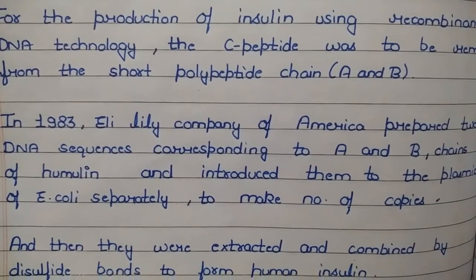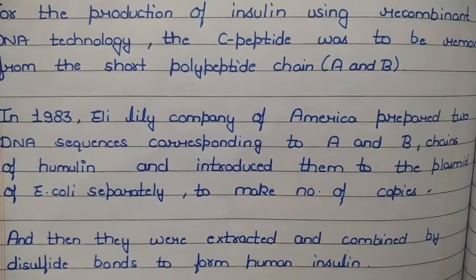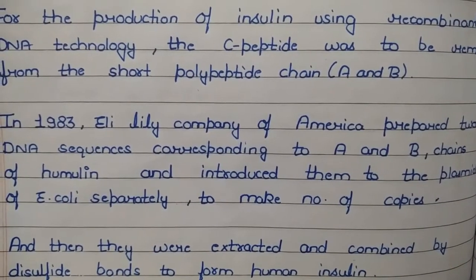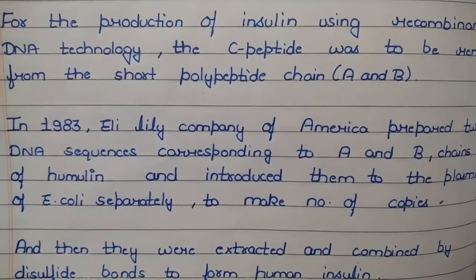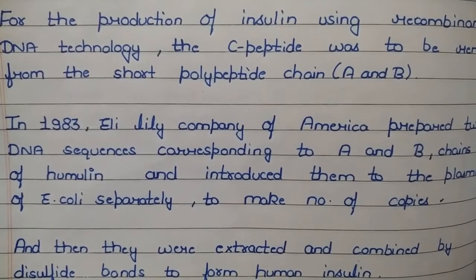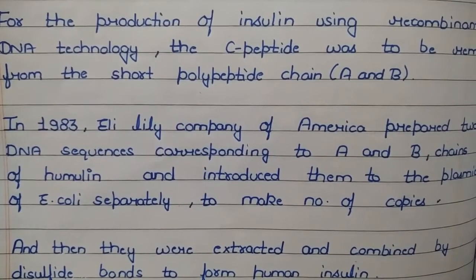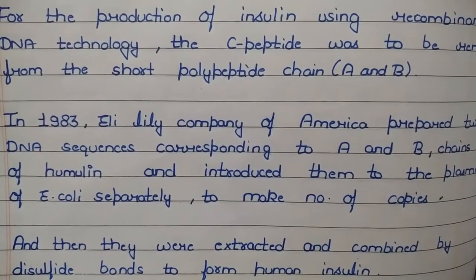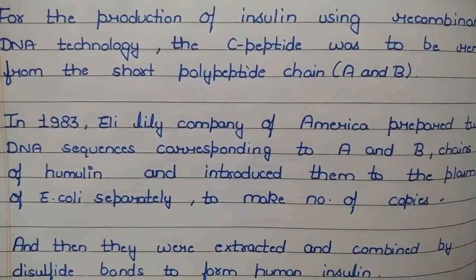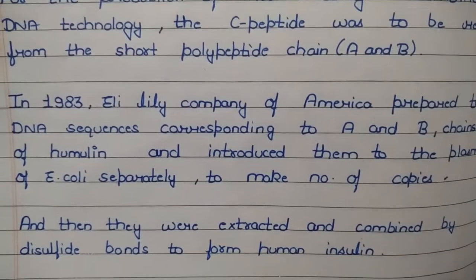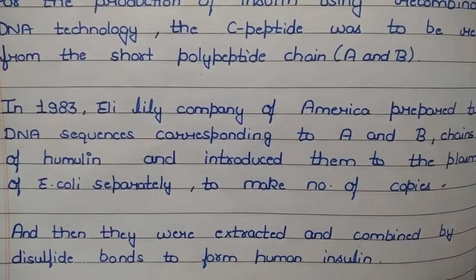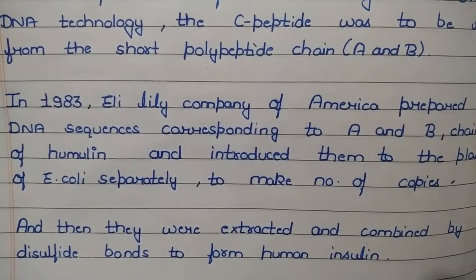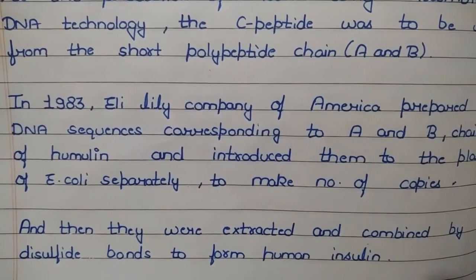The DNA sequences for the A and B chains were taken from human insulin — not extracted from slaughtered cattle or pigs, which had caused side effects in patients. These sequences were introduced separately into E. coli bacteria to produce multiple copies. Once the copies were made, they were extracted and combined by disulfide bonds to form human insulin.